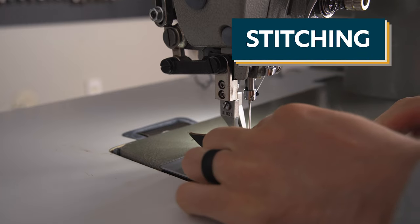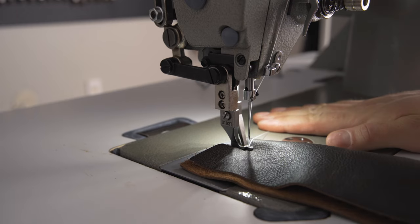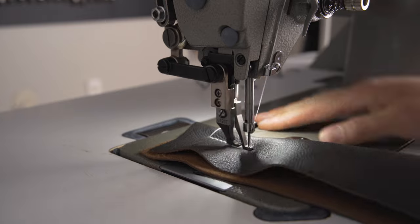To start stitching, raise the presser foot and insert your material. During your first few stitches, you will want to hold the thread from both the bobbin and the needle behind the foot. Simply use foot pressure on the treadle to begin stitching.